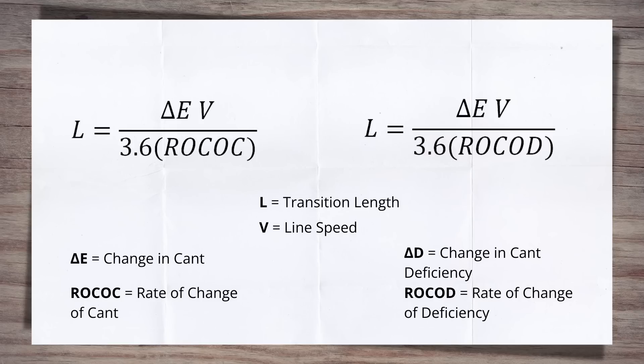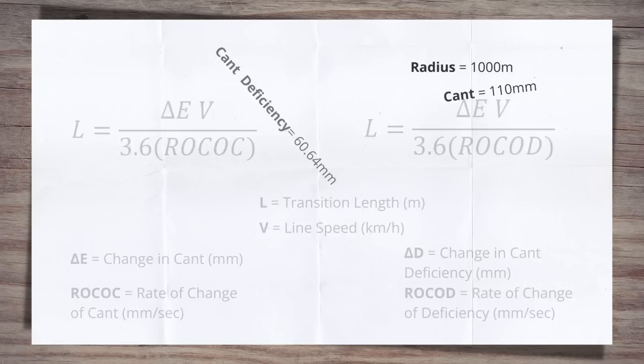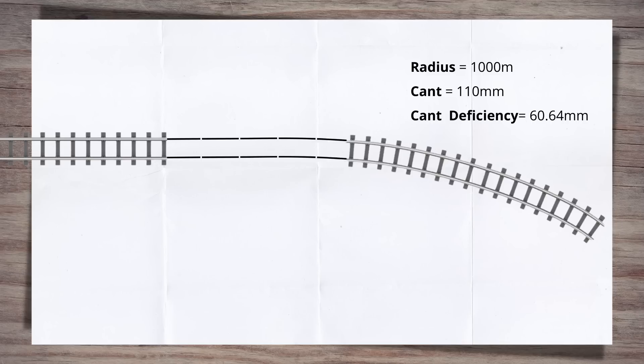Nicely for us, the form is the same for both the rate of change of cant and cant deficiency. It's important to note here that this is the applied cant that is used, not the equilibrium cant. This is why the cant deficiency is checked as well. So we have the length is equal to the change in cant multiplied by the line speed divided by 3.6 times the rate of change of cant. For cant deficiency, simply sub the change in deficiency and the rate of change values in. This equation is based on metric measurements, therefore the cant will be in millimetres while the line speed needs to be in kilometres per hour.